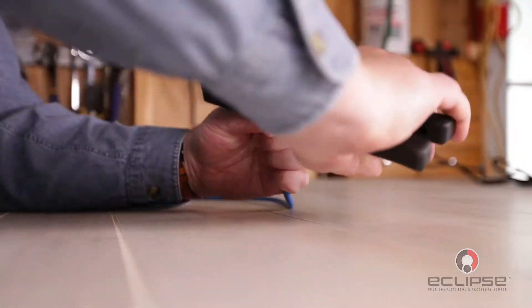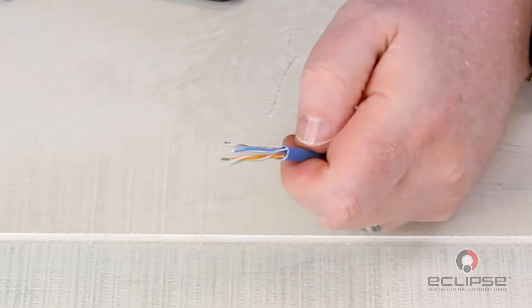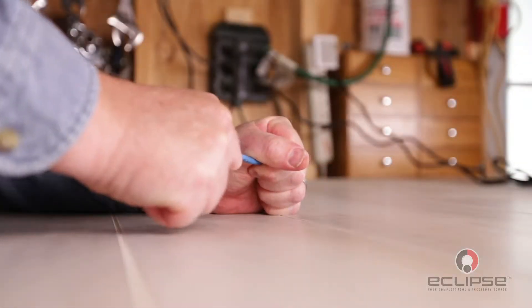Keep in mind you do not want to nick the sheathing on the interior wires. Strip enough to expose several inches of the wire to work with. Don't worry, any excess will be trimmed off during the crimping process.